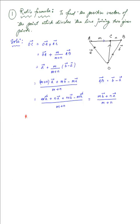Now we consider the special case where point C divides AB in equal parts, meaning M equals N. Setting M equal to N equal to some value X, the position vector OC becomes X times (a + b) divided by 2X. The X cancels out, giving OC = (a + b)/2. This is the midpoint formula, and for any other ratio M to N we use the section formula derived earlier.